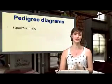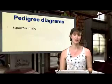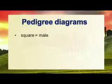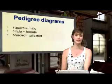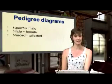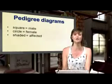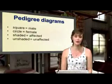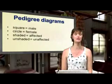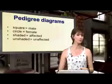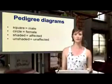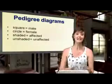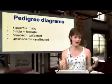Let's look at the rules for a pedigree diagram. A square represents a male; a circle represents a female. If the square or circle is shaded in, that person is affected by the trait we are looking at. If it is unshaded, that person is unaffected. Squares are males — sharp and strong edges. Circles are females — round and curvy. Shaded means you've got it; unshaded means you don't.